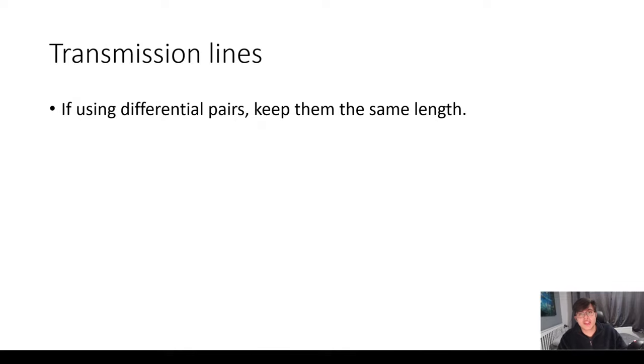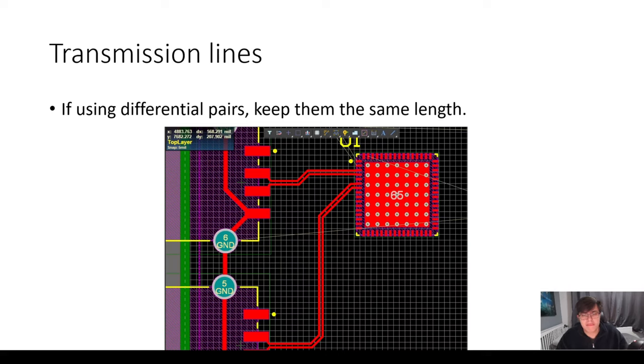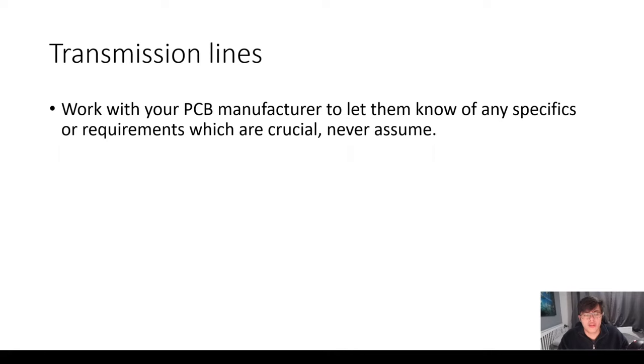If using differential pairs, keep them the same length. So this goes for all differential pairs regardless what you're routing. This is a quick example of one. You can see it's came out of here and it's coming as close as possible. To maintain that, I believe with some differential pairs - I think for USB there is a 75 to 90 ohm - there's a controlled impedance you have to keep in mind. So it matters about the width, the distance between the two tracks. Work with your PCB manufacturer to let them know of any specifics or requirements which are crucial. Never assume. This is a mistake I've probably made one too many times - just assuming things and thinking it'll be all right, and of course it's never a good thing. It's a terrible habit, I tell you.